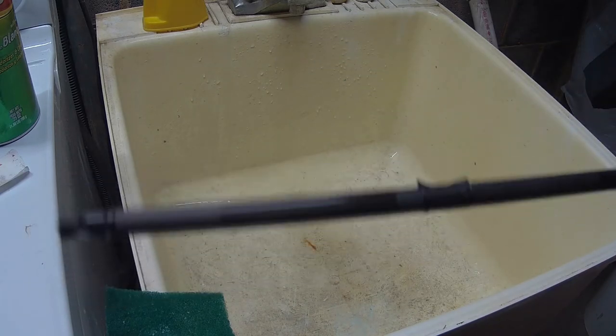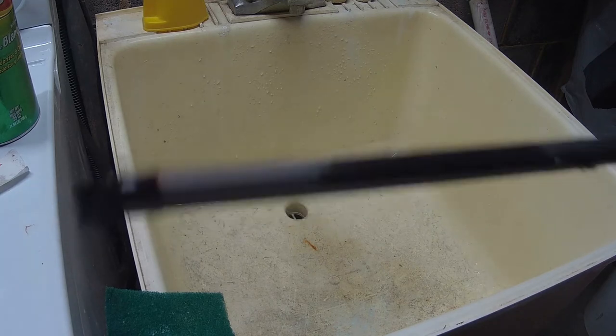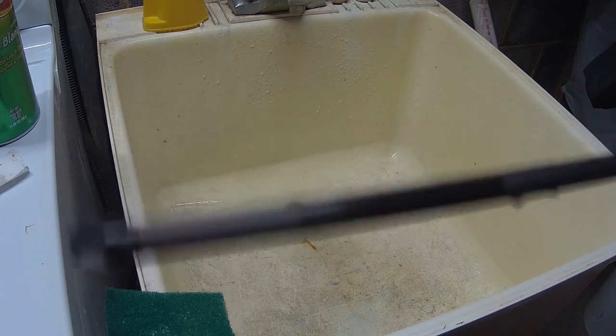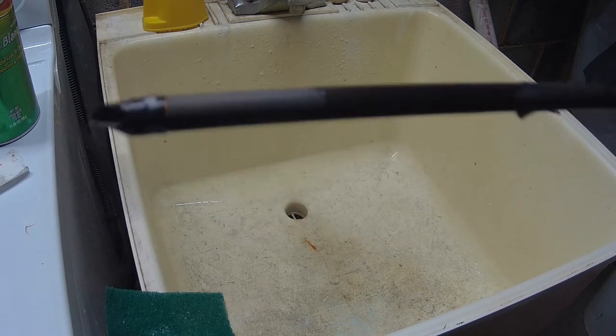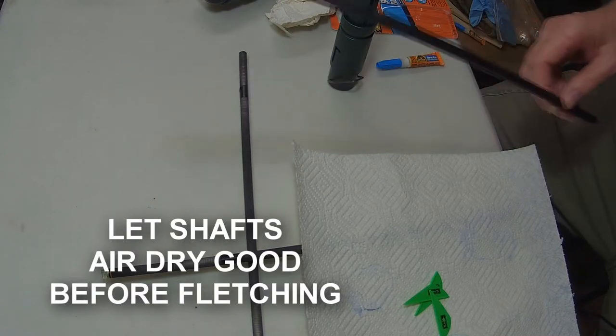Okay, now we won't touch that and we'll leave it to air dry. So now don't touch where you cleaned it. You don't need to do the whole shaft, just where you're going to fletch. When we put our fletchings on, I'll use latex gloves so that I get no oil on that shaft. We left our arrows to air dry.